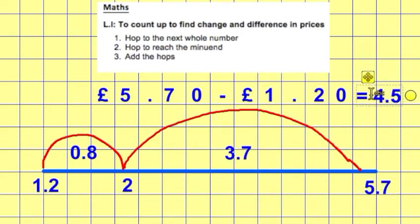In the context of money, let's pop our pound sign there and make sure we put something in the hundredths column — so that's £4.50. Good luck!